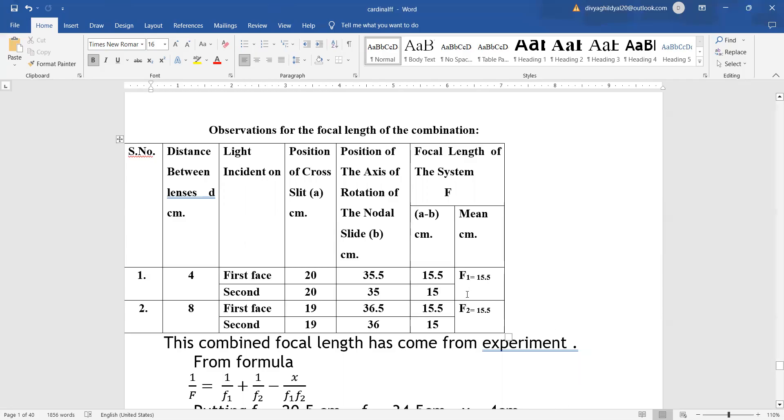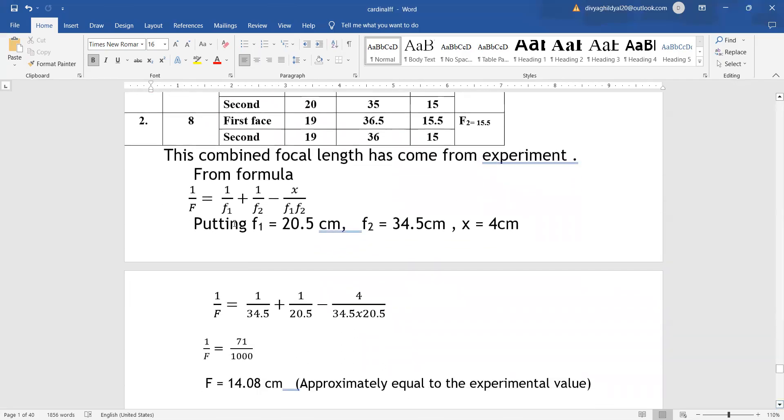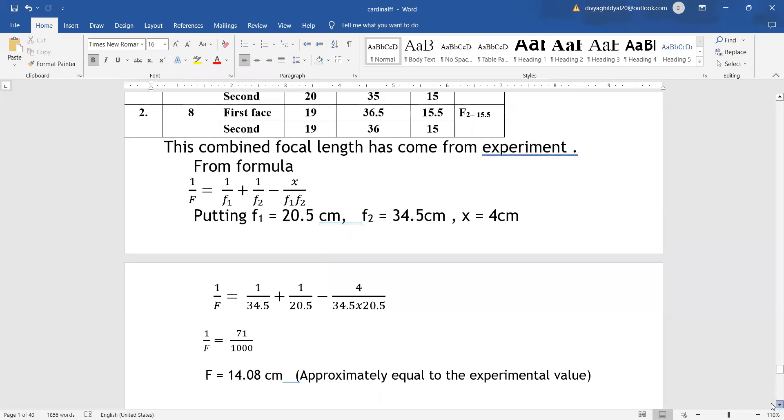We will verify the combined focal length - one we got experimentally with the nodal slide setup and one we will find with the formula. That is, 1/f, we will put f1 as first focal length 20.5, f2 the second focal length 34.5, minus x distance 4 cm, and f1*f2. This way, we are getting approximately the same value as the experiment. In the experiment, we got 15.5, and with the formula we got 14.08, which is acceptable.